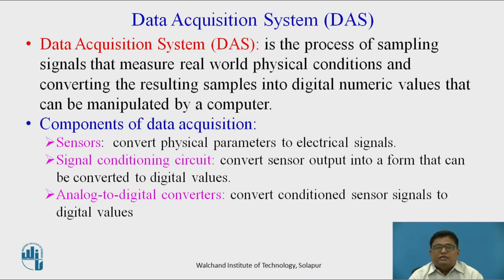The data acquisition system is the process of sampling signals and measuring real-world physical conditions, and converting the resulting samples into digital numeric values that can be manipulated by a computer.